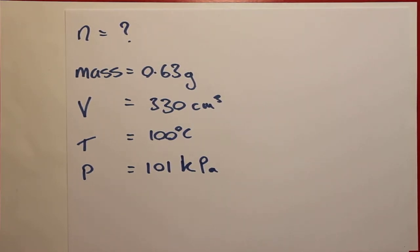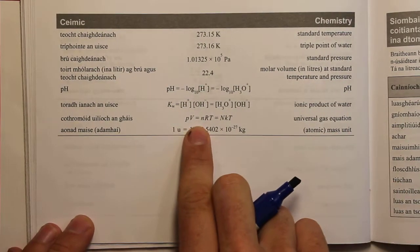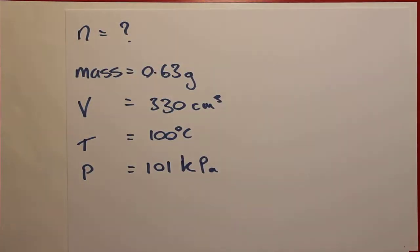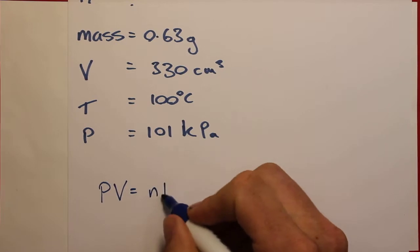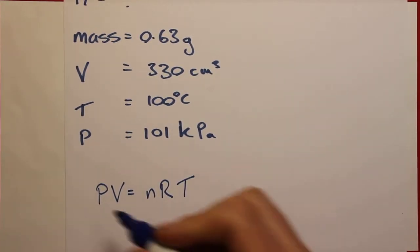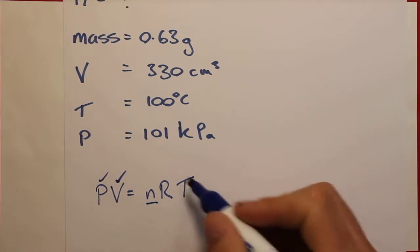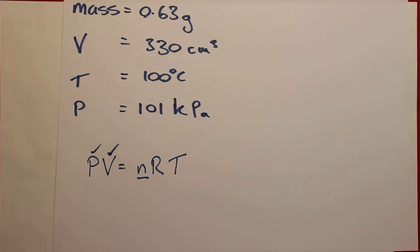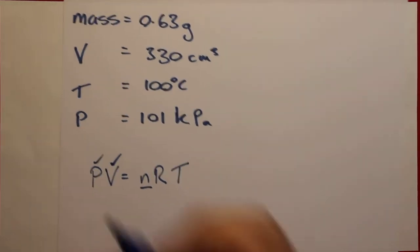We need to decide on the equation to use. Looking at the formula and tables booklet on page 64, we find the universal gas equation: PV = nRT. This fits well with what we have. We have pressure, volume, and we're looking for moles n. R is not explicitly given but is found in the booklet: R = 8.3 joules per kelvin per mole. We also have temperature.